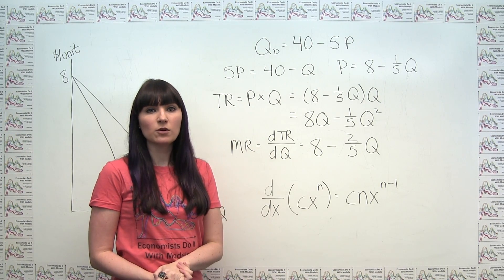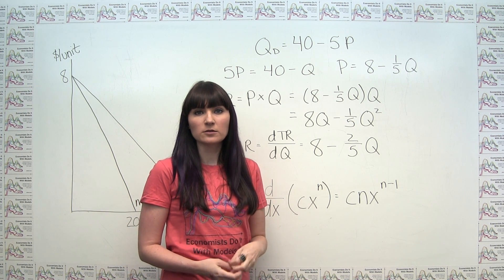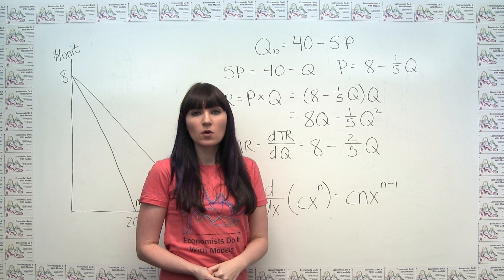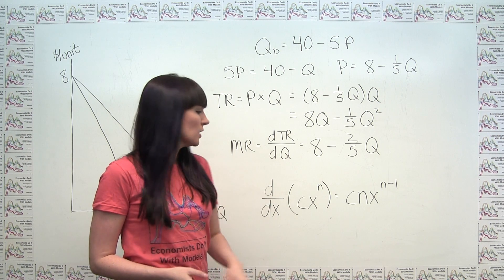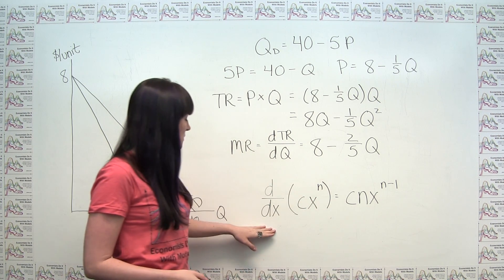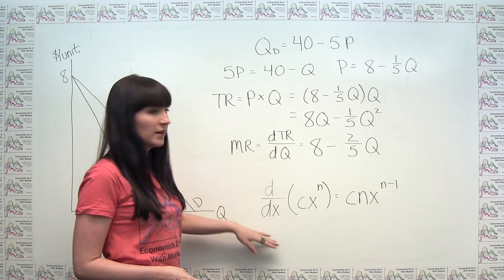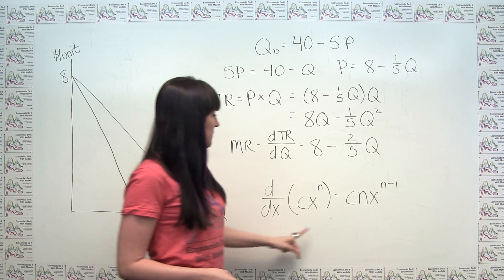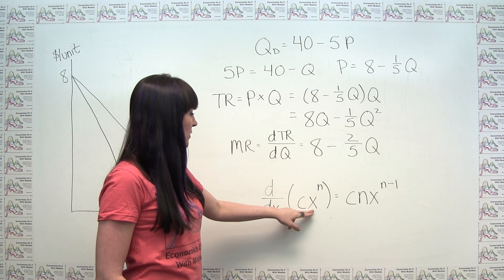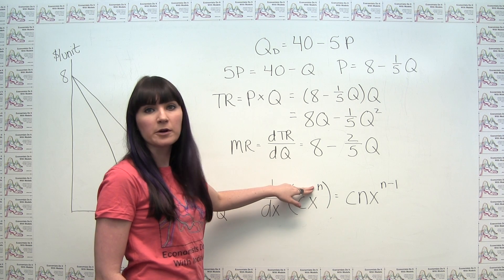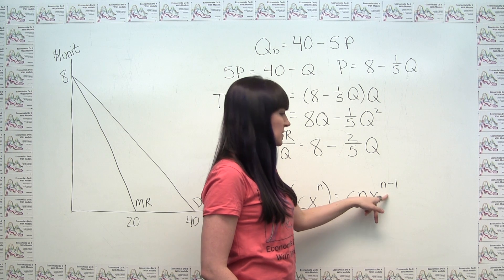You don't actually have to know a lot of calculus to do this, especially when dealing with straight-line demand curves. There's basically only one rule you need: the derivative with respect to x of a constant c times x to the power n is equal to cn times x to the n minus 1.